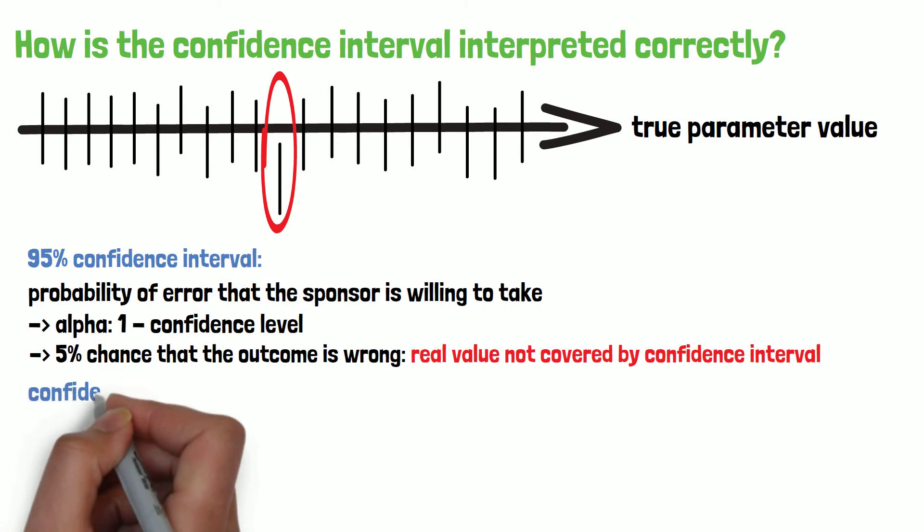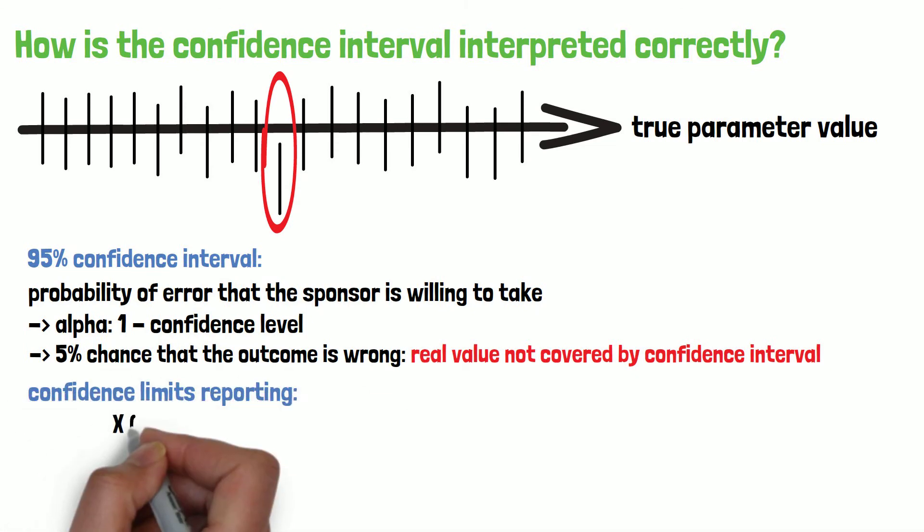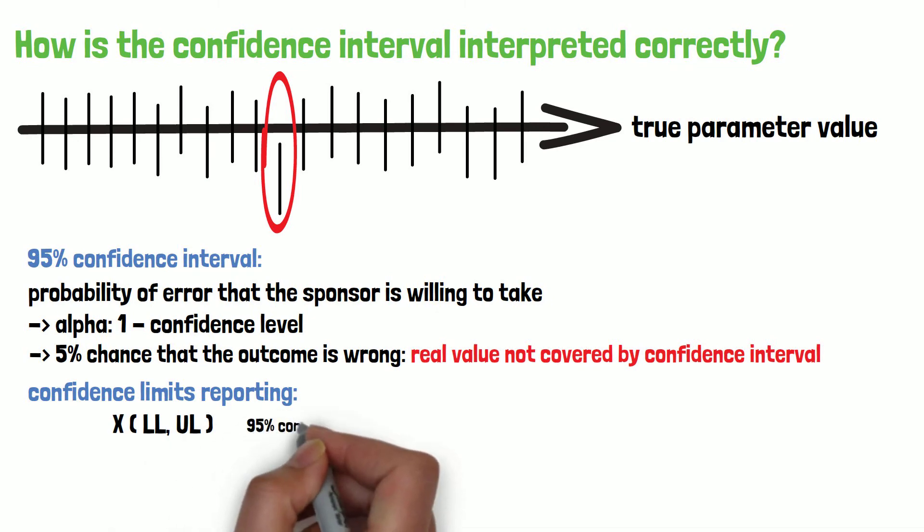Confidence limits are usually reported as the estimate X, with a lower and upper limit. The level of confidence should always be reported too.